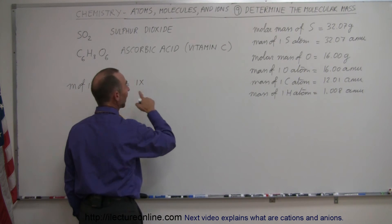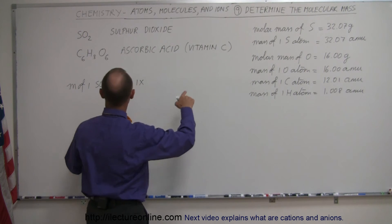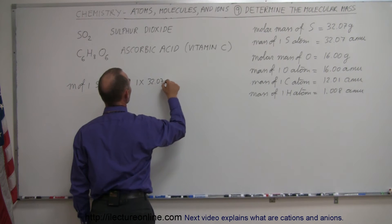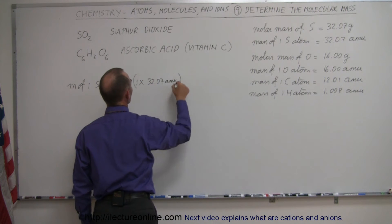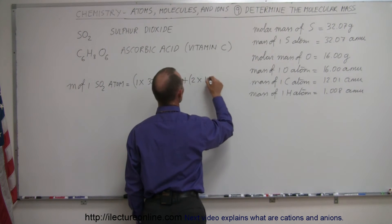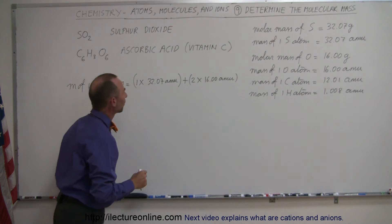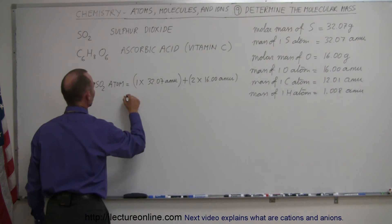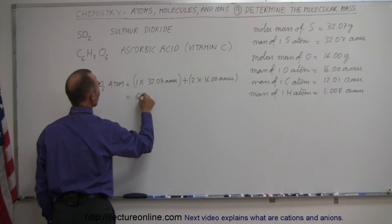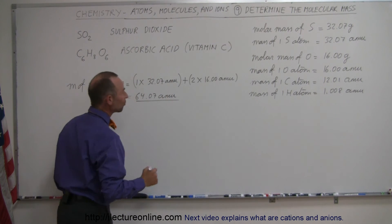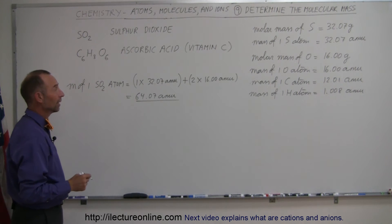So we take 1 times the mass of a single sulfur atom, and that's up here, 32.07, 32.07 AMUs, and we're going to add that to 2 times the mass of a single oxygen atom, which is 16.00 AMUs. And so if we multiply that together, we get 32, plus 32 is 64, plus 0.07, so this would be equal to 64.07 AMUs. That would be the average mass of a single sulfur dioxide atom.